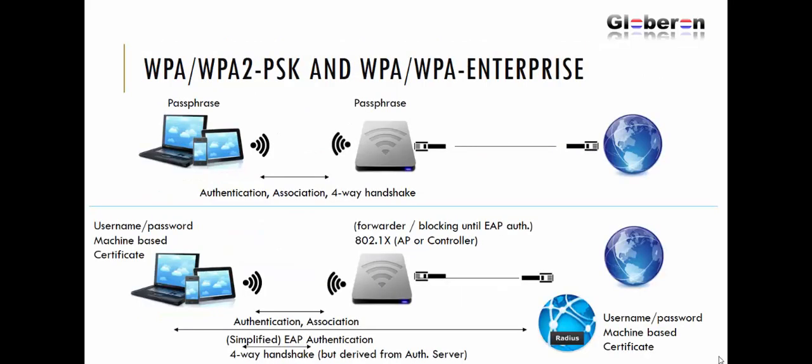WPA2-PSK (Pre-Shared Key) and WPA2-Enterprise are visualized here. On the top, a laptop, smartphone, or tablet connects wirelessly to an access point. In the PSK version, the client device and the access point both have the passphrase stored on their devices — this works for smaller environments. The client authenticates and associates, and after that there is a four-way handshake between those devices. That four-way handshake is the one that has been cracked.